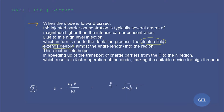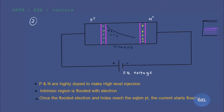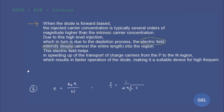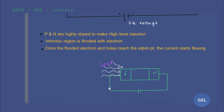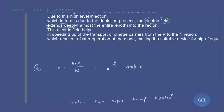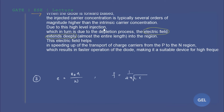When the diode is forward biased, the injected carrier concentration is typically several orders of magnitude higher than that of intrinsic carrier concentration. Due to the influence of this photon and this voltage, this injection is called high-level injection. Always remember this term: high-level injection.